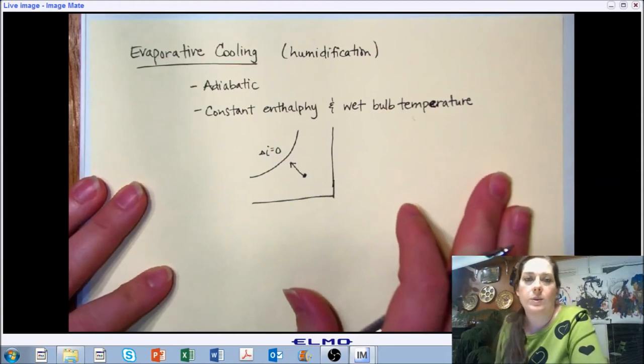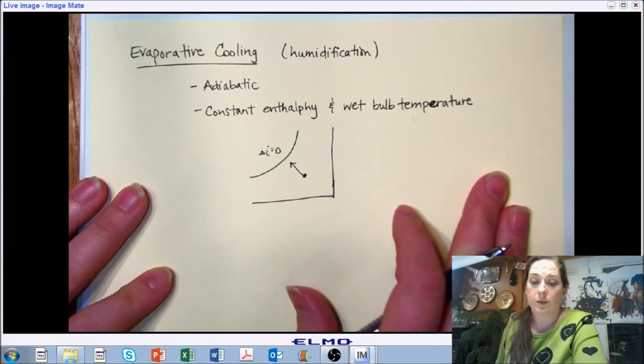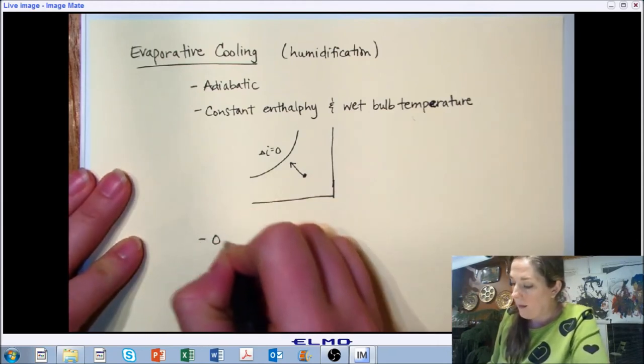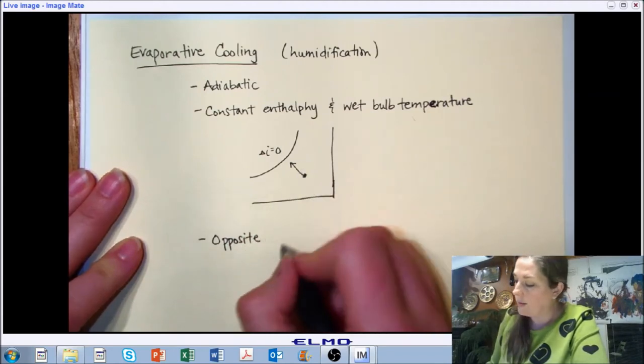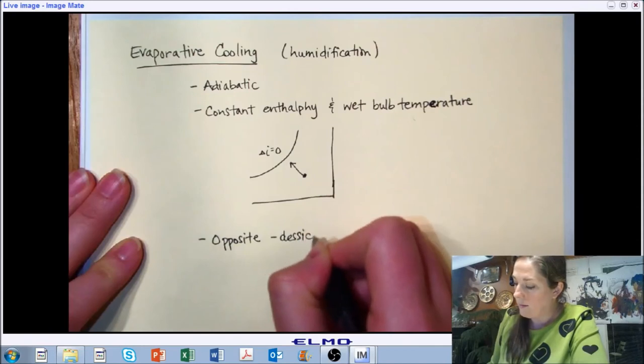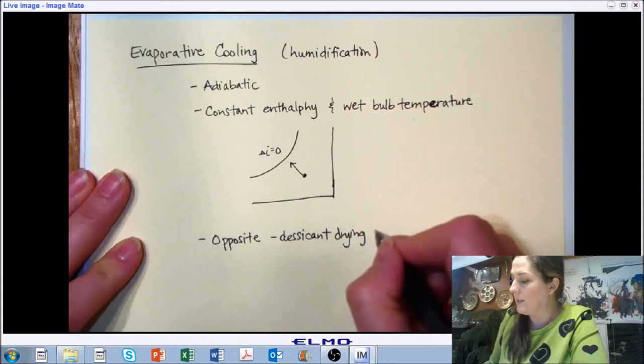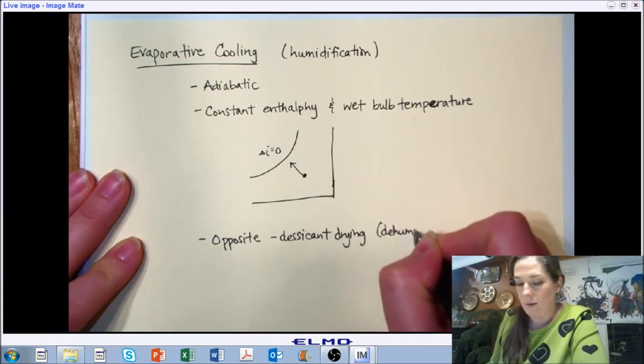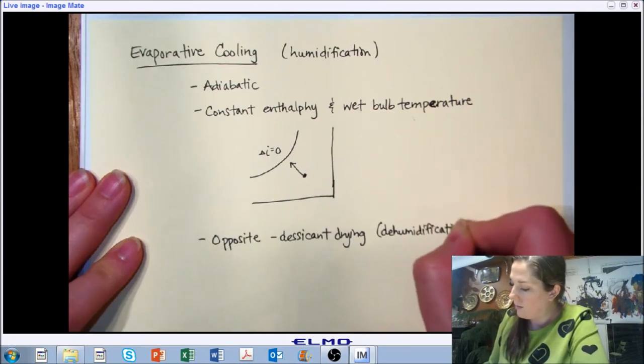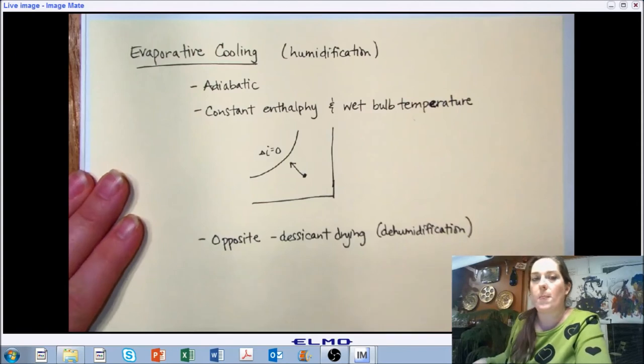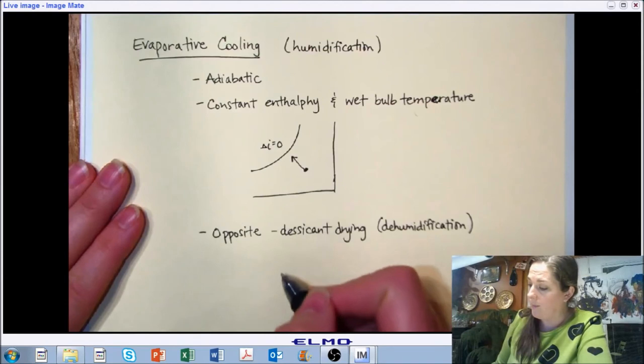And we're not going to say too much about it as we're just introducing it here. We'll talk a little bit more about it. We'll talk a lot more about it whenever we're doing some of our example problems. The opposite of this process is what we call desiccant drying or desiccant dehumidification.